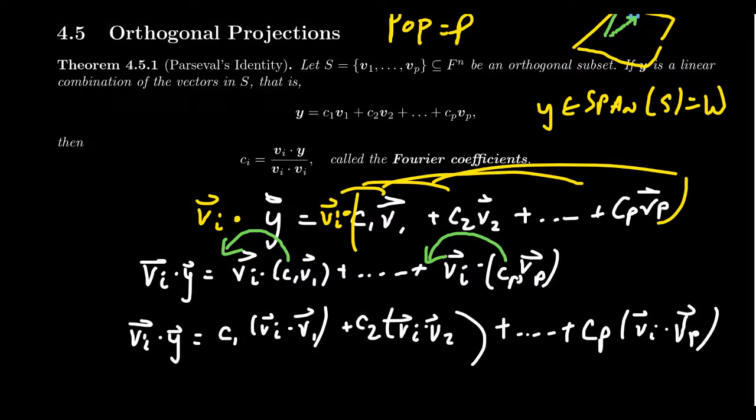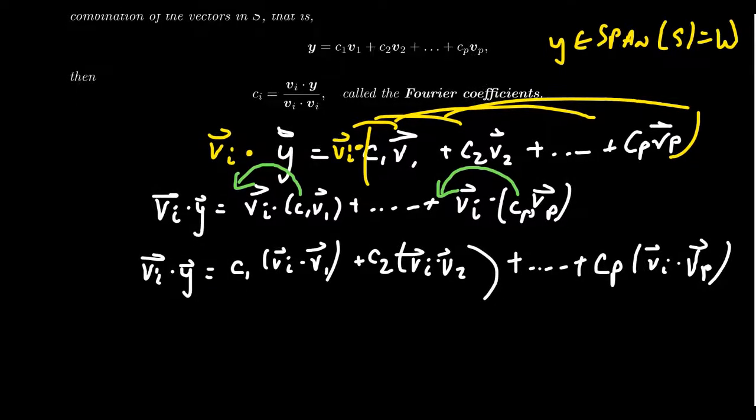And so this is where the assumption of orthogonality comes into play. Look, we have all these dot products, all these Hermitian products, between the vectors from S. And so these should all be zero with one important exception. These are all going to turn out to be zero with the exception of the I position CI is going to look like VI dot VI.